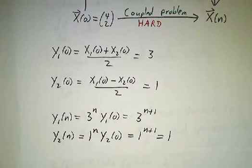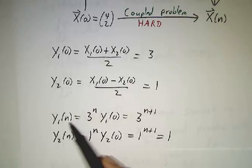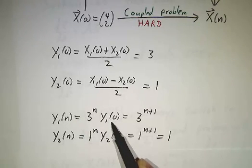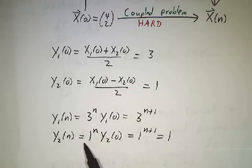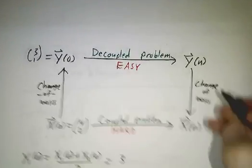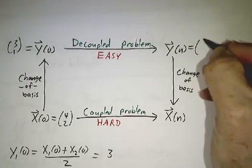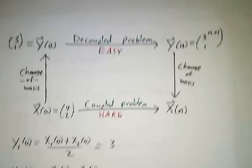Then we said that y1 was 3 times y1 of n minus 1. So y1 triples every time. So y1 of n is 3 to the n times y1 of 0. So 3 to the n times 3 is 3 to the n plus 1. y2 of n is 1 times y2 of n minus 1. You multiply by 1 each time. So you multiply by 1 to the n. And of course that's 1. And so up here, this is 3 to the n plus 1, 1.